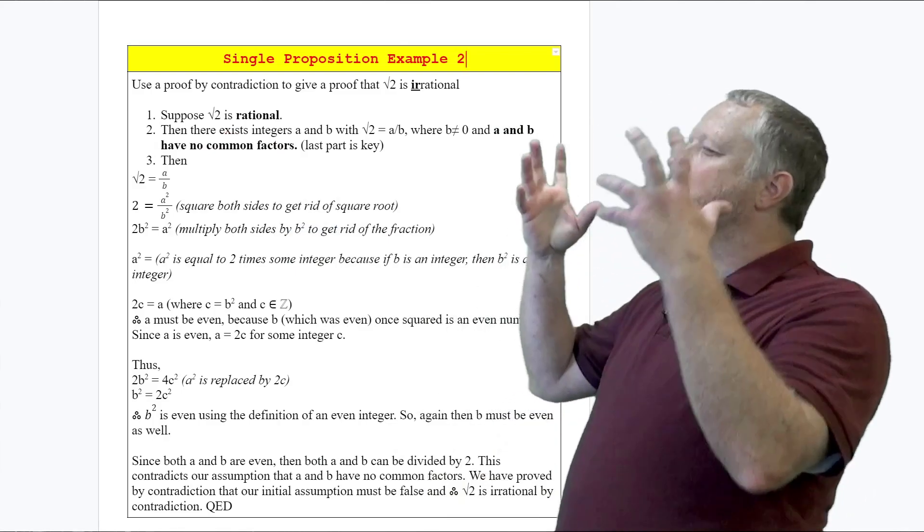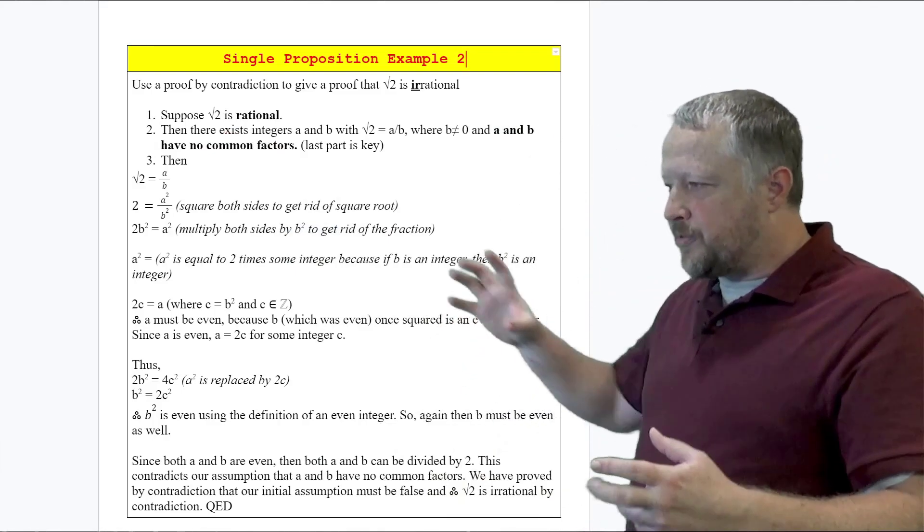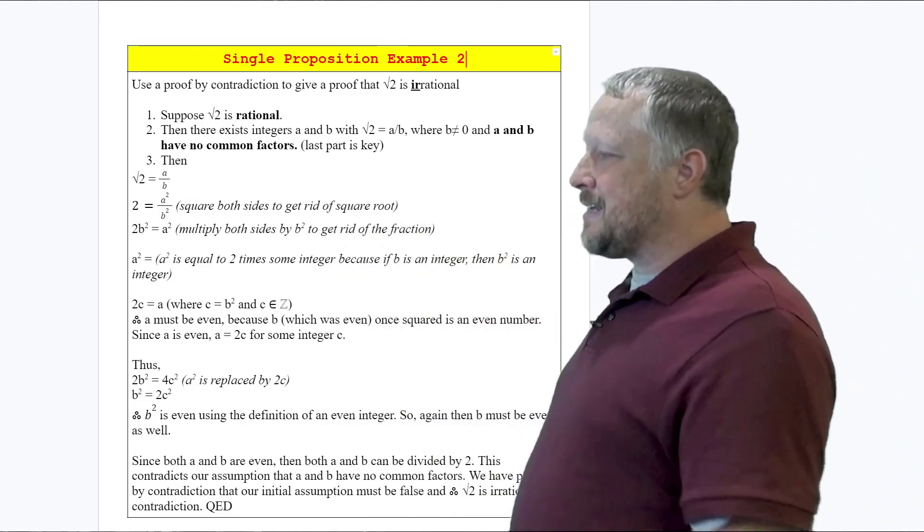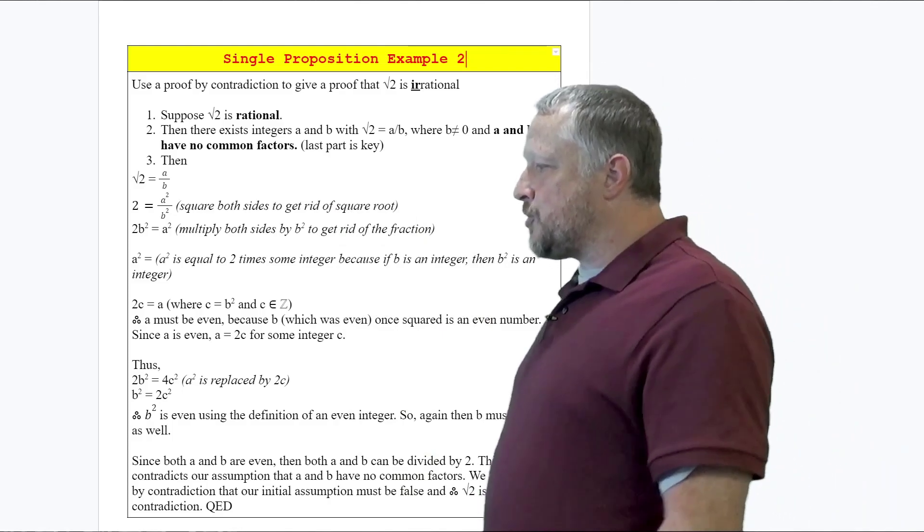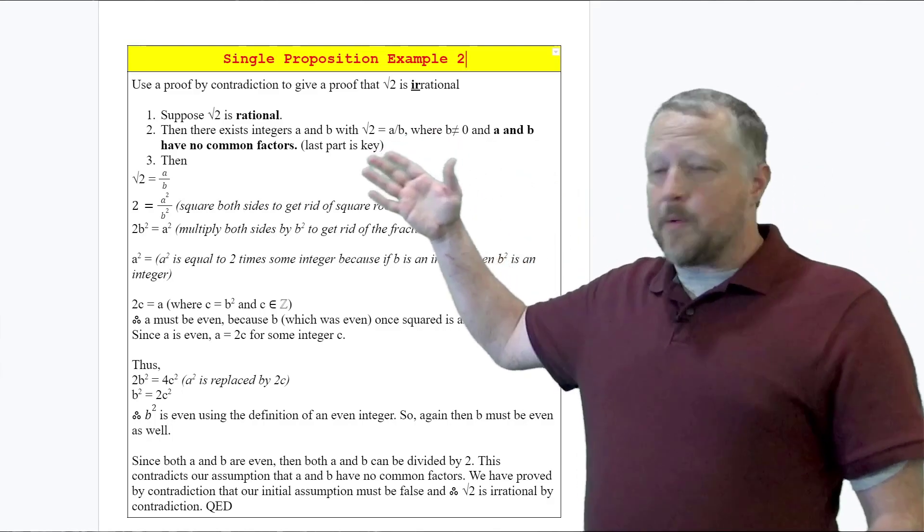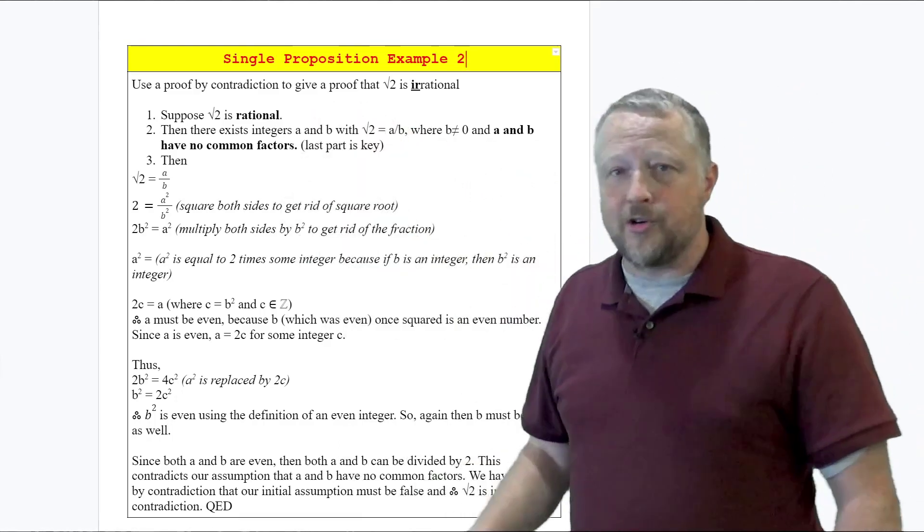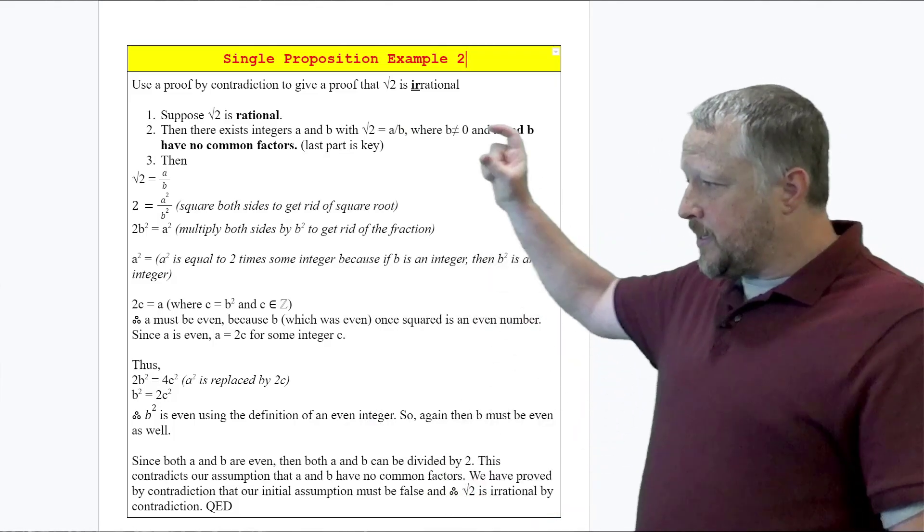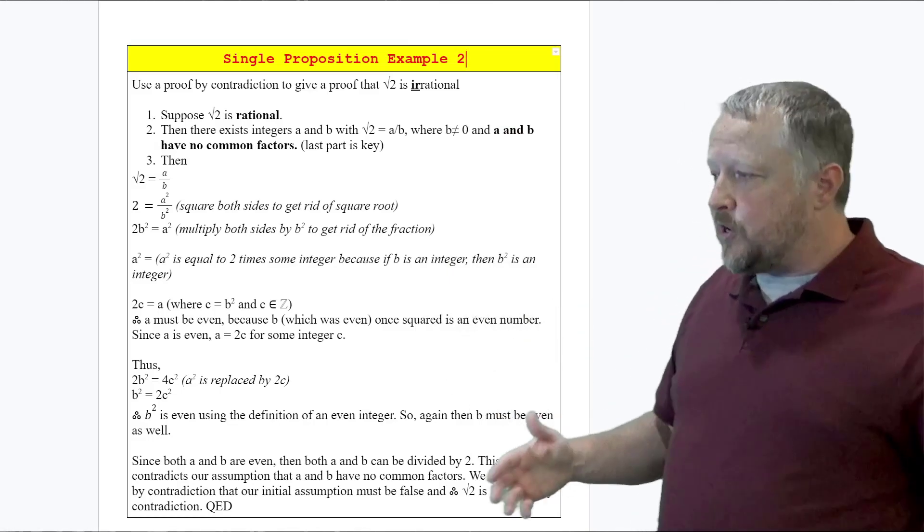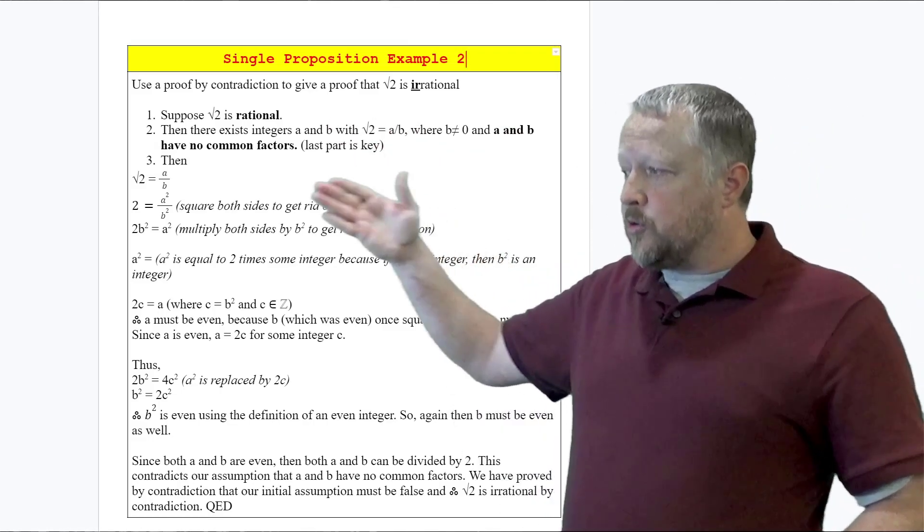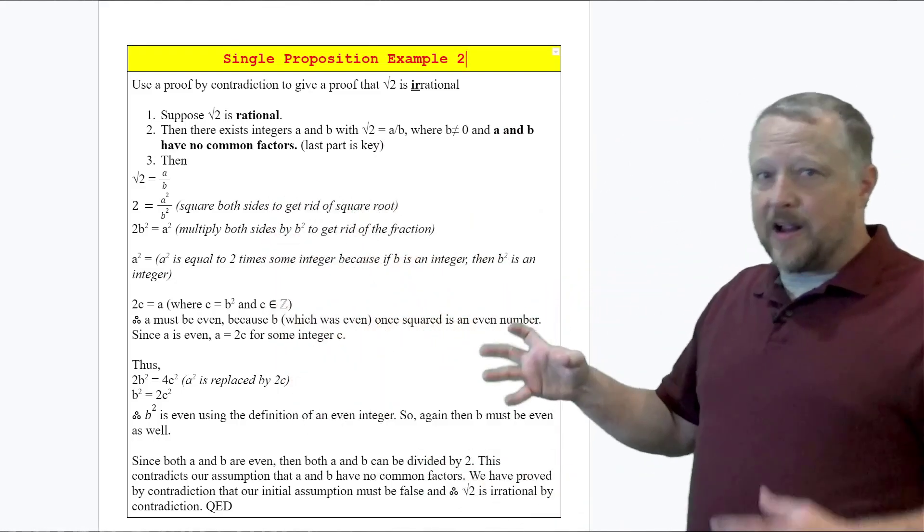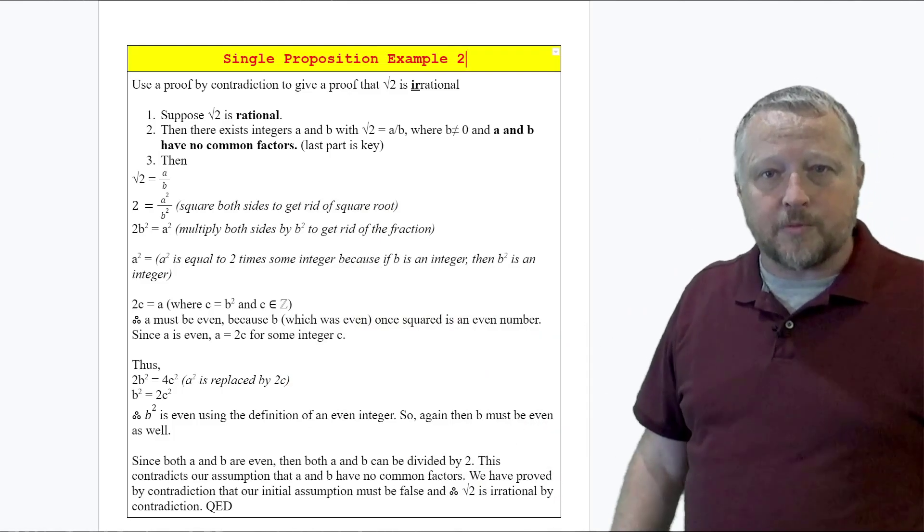underline that because part one is flipping it - we assume √2 is rational. We need to look up what rational means. Step two: then there exist integers a and b such that √2 = a/b where b ≠ 0, and that's the common definition of what a rational number is. We've gone over that type of problem already. This didn't come from the heavens - it came from researching exactly what a rational is, and we're going to use those equations to find out there's a problem.